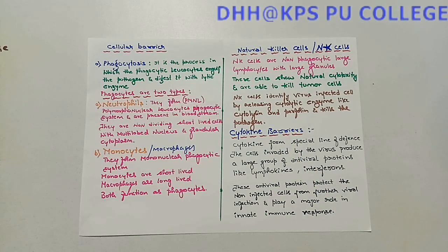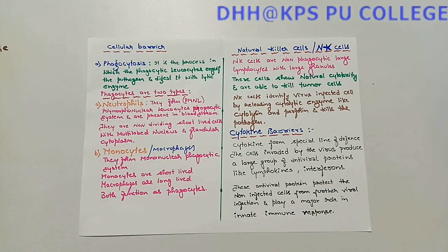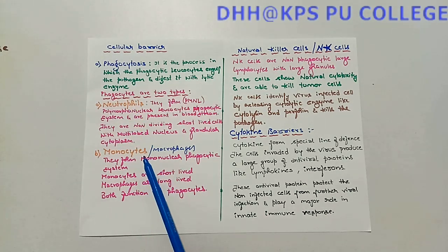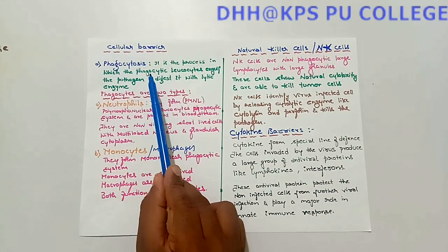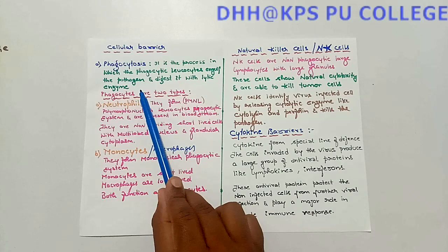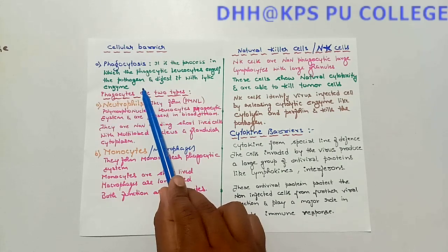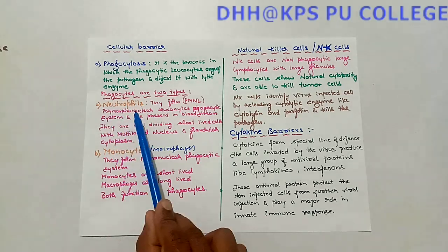The first cellular barrier is phagocytosis. Phagocytosis is a process in which phagocytic leukocytes engulf the pathogen and digest it with the help of lytic enzymes. The cells involved in phagocytosis are called phagocytes, and there are two types: neutrophils and monocytes.